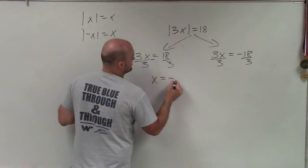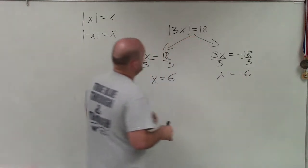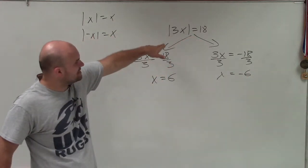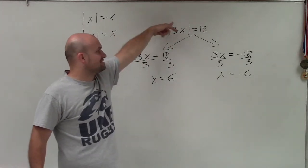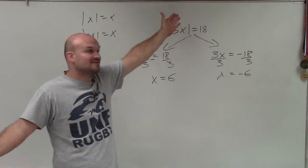So therefore, x equals 6, and x equals negative 6. I'll go ahead and plug these back in to verify. When I plug in 6, 3 times 6 is positive 18. Absolute value of positive 18 is obviously 18.